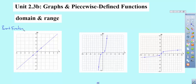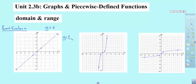Parent functions are kind of like the bare minimum, the basic function. So this one would be y equals x. Remember, each one of these has arrows on the end. We could add numbers on the front or back — for example, y equals 2x plus 3 — but that's not what we're worried about right now. This is just the parent function. It creates a straight line and is called a linear function.